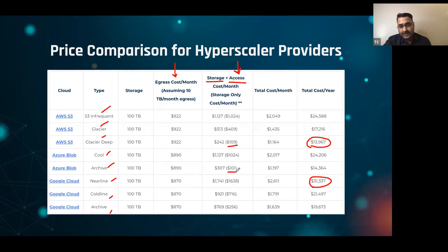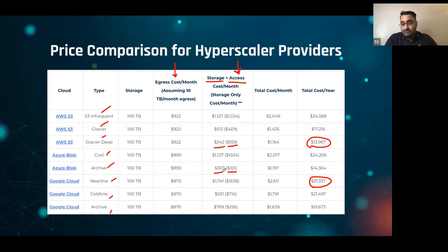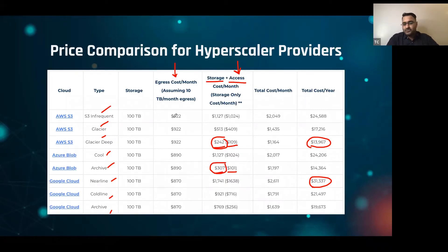Now let's take the next step — the cost of storing and accessing that data. When we say accessing, it means you're repurposing this data in the data center itself by spinning up a virtual machine in the cloud. In that case, if you're repurposing roughly 10 terabytes of that 100 terabytes every month, you're still not paying that much — roughly $240 to $300 a month on S3 and Blob — ending up paying $2,400 to $3,600 a year, which also isn't bad.